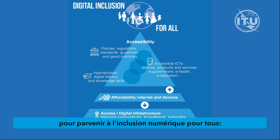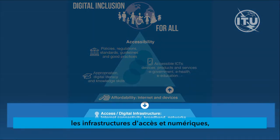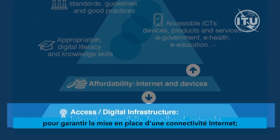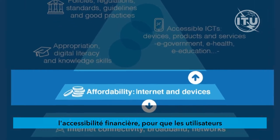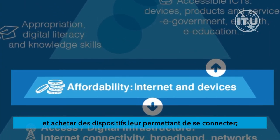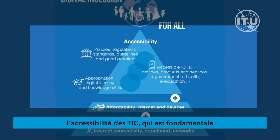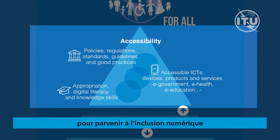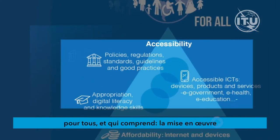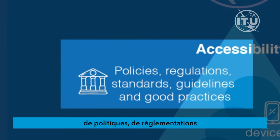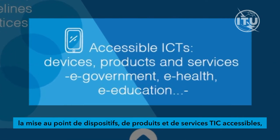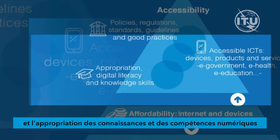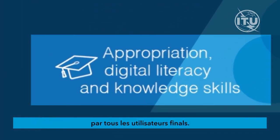Three building blocks are needed to achieve digital inclusion for all. First, access and digital infrastructure to ensure internet connectivity is in place. Second, affordability, so that users can afford internet access and buy devices to connect. Third, accessibility of ICTs, which is key to fulfilling digital inclusiveness for all people and encompasses implementation of ICT accessibility policies, regulations, and standards, development of accessible ICTs including devices, products, and services, and appropriation and digital knowledge skills by all end users.